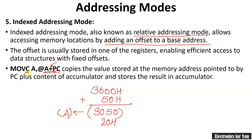In index addressing mode, the offset is usually stored in one of the registers — here it is stored in A — enabling efficient access of data structures with a fixed offset.